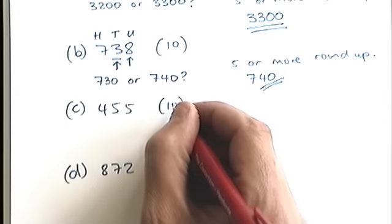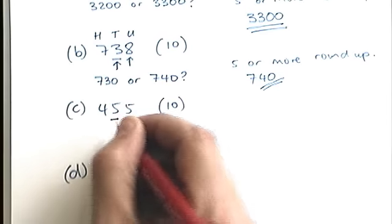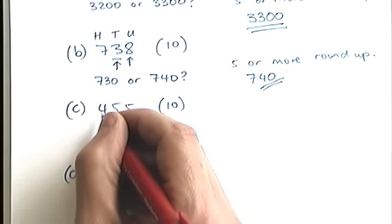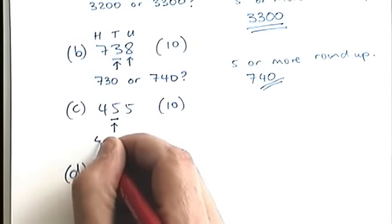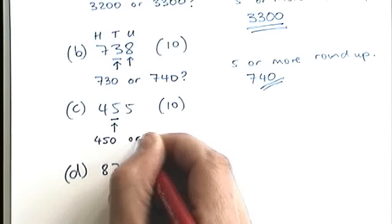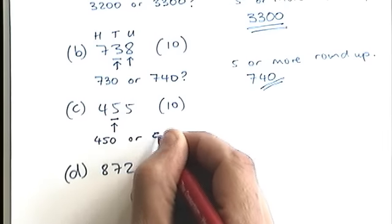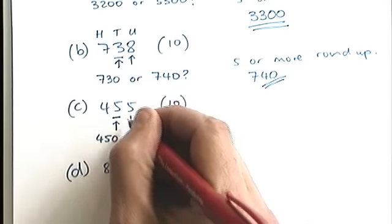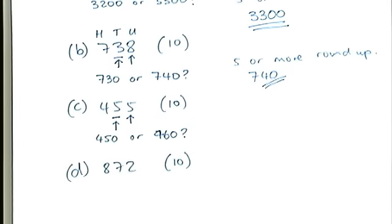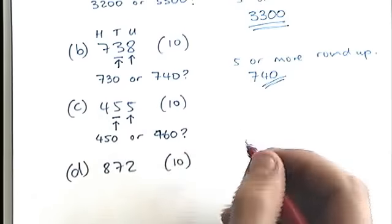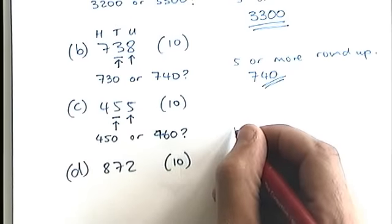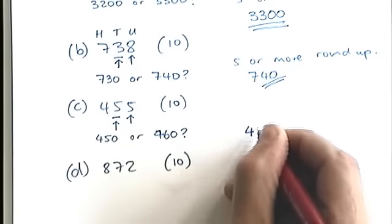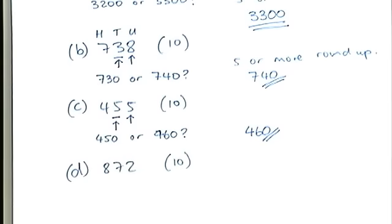This next one, again rounding to the nearest ten. So I look in the tens column, I say this is 450, or it might be 460. How do I know? I look at the next digit, which is a five or more, so I round up. So I'm going to choose 460 as my answer for that one.